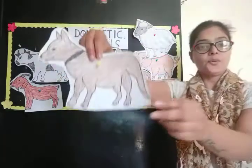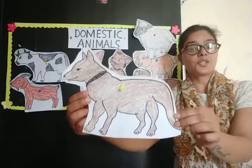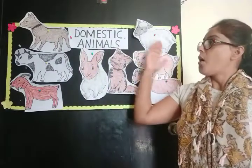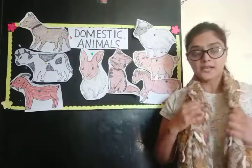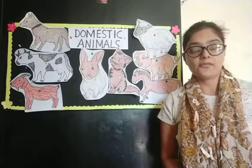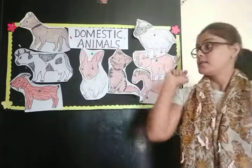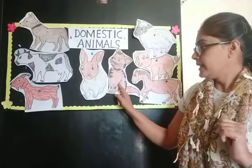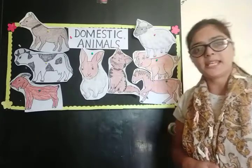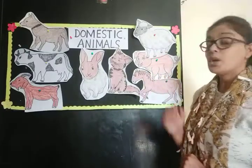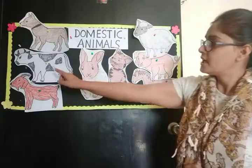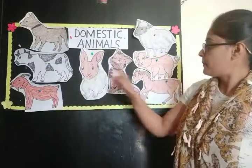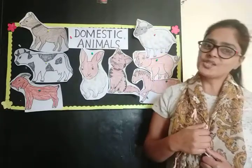And all of you know — which animal is this? It's a dog. Yes. And children, all animals have four legs. They have a tail and two ears. Horse, cow, dog, and cat — they have a small tail. And some have a long tail, a big tail. And goat, rabbit, pig, and sheep — they have a small tail.